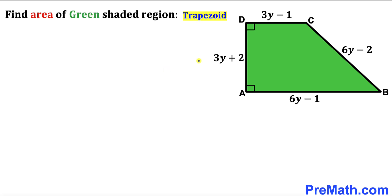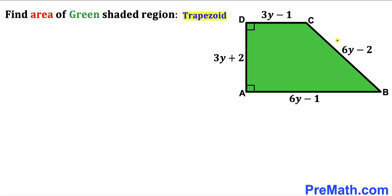Welcome to pre-math. In this video we have got a green shaded trapezoid ABCD such that side AB is represented by 6y minus 1, side BC is represented by 6y minus 2, side CD is represented by 3y minus 1, and side AD is represented by 3y plus 2. Our task is to calculate the area of this trapezoid ABCD.